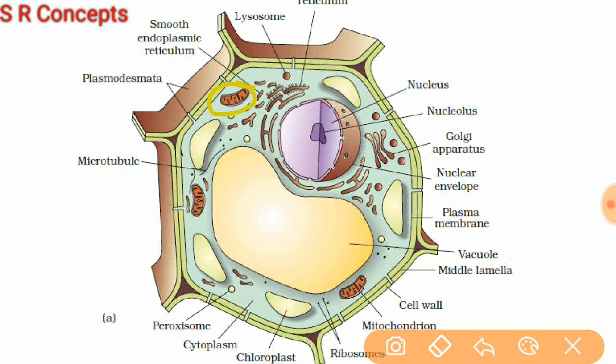Next, look at this structure — this is representing another cell organelle: chloroplast. Chloroplast is present only in plant cells. It is not present in bacterial, animal, or fungal cells. The chloroplast has a green colored pigment called chlorophyll. Chlorophyll helps in carrying out the process of photosynthesis, by which plants produce food for themselves.